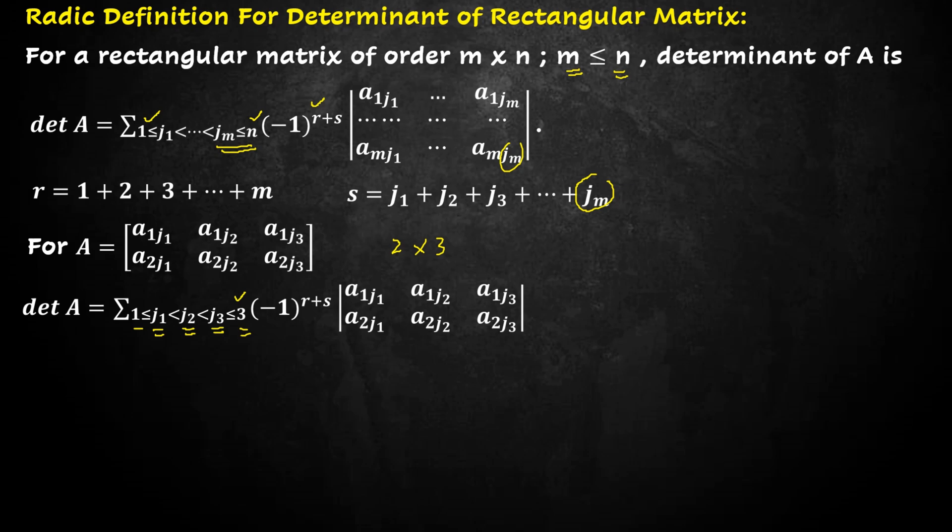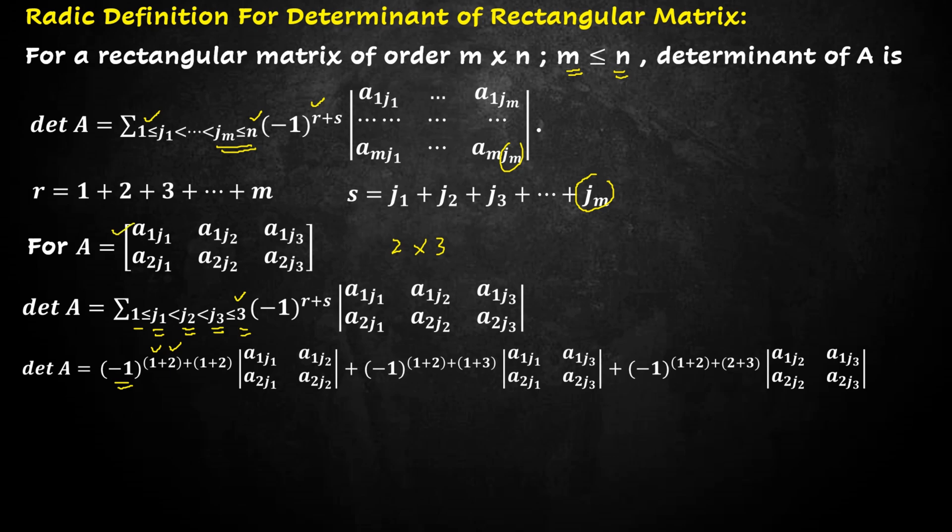Now we expand this summation and write the determinant as determinant of A is equal to this expression. Let's elaborate it. First, we take minus 1 raised to power 1 plus 2. As there are 2 rows, therefore the sum of rows will be 1 plus 2 and it will be 1 plus 2 in each term.